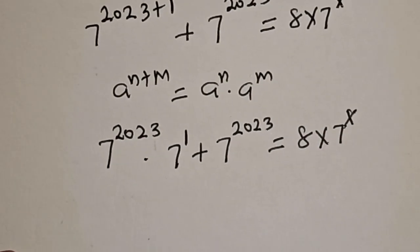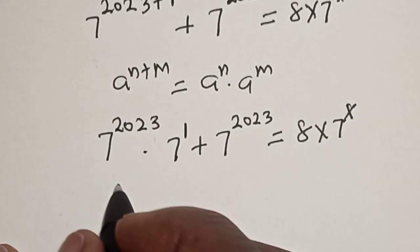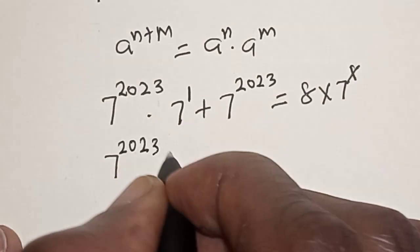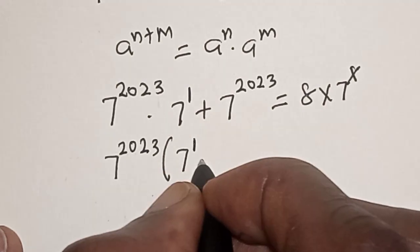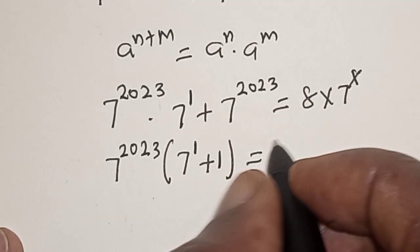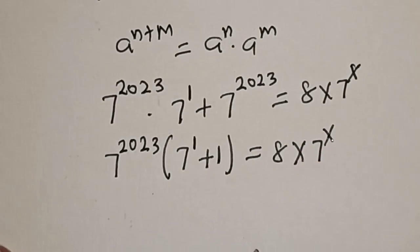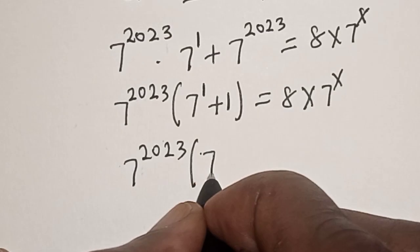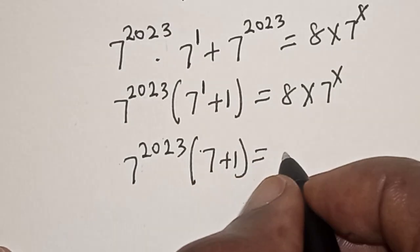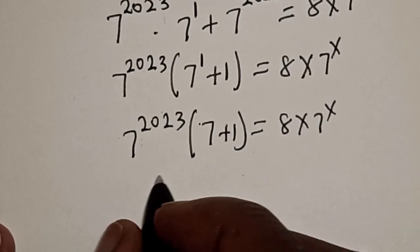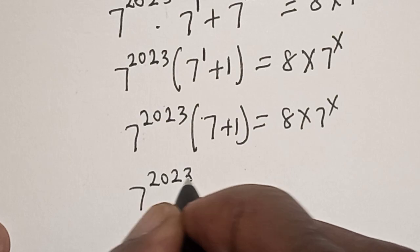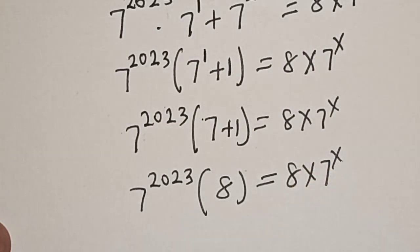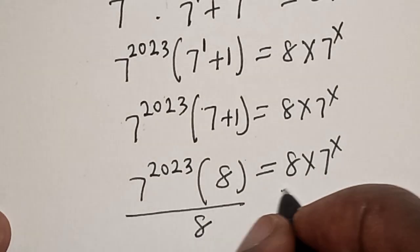Applying that rule, 7 raised to power 2023 multiplied by 7 raised to power 1, plus 7 raised to power 2023, equals 8 multiplied by 7 raised to power x. Factoring out 7 raised to power 2023, we get 7 raised to power 2023 times the bracket 7 plus 1, which equals 8, is equal to 8 multiplied by 7 raised to power x. Now divide both sides by 8.